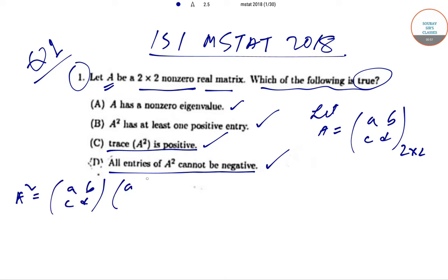A² is the matrix [a b; c d] times the matrix [a b; c d], and this will be equal to the matrix [a²+bc, ab+bd; ac+cd, bc+d²].